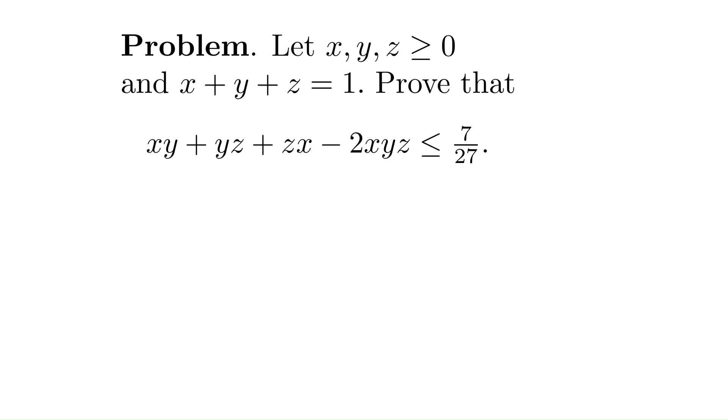Let's look at this IMO problem, a conditional inequality. Assume x, y, and z are positive numbers and their sum is 1. Prove that xy plus yz plus zx minus 2xyz is less than or equal to 7 over 27.